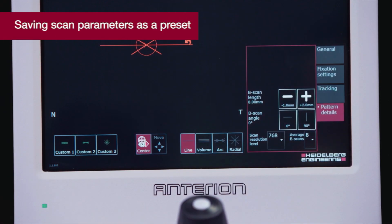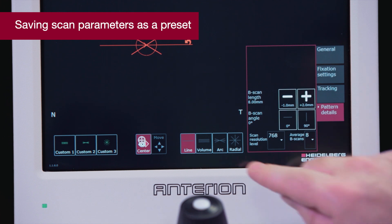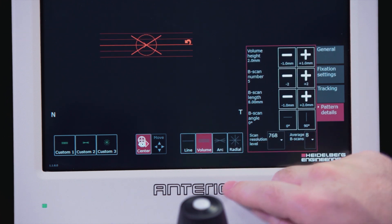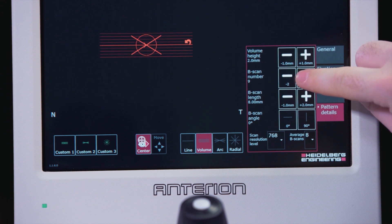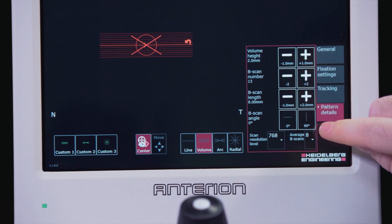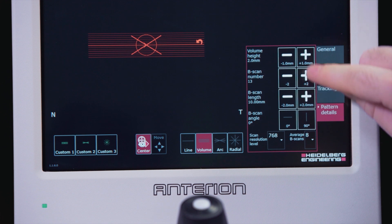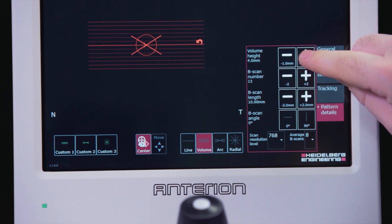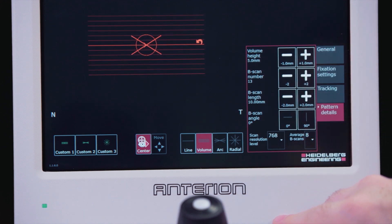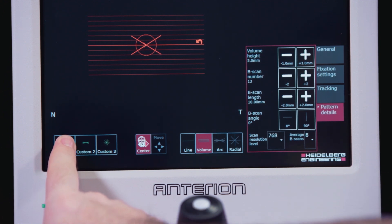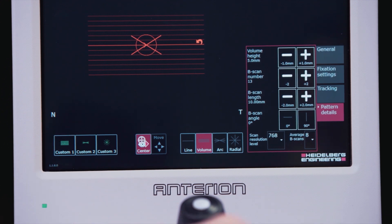For volume patterns on the pattern details tab, we can also adjust the height and number of B scans. You can save up to three personalized scan patterns by holding down the custom buttons one, two, or three until the message pattern preset saved is displayed. The symbol of the scan is saved on the preset button.